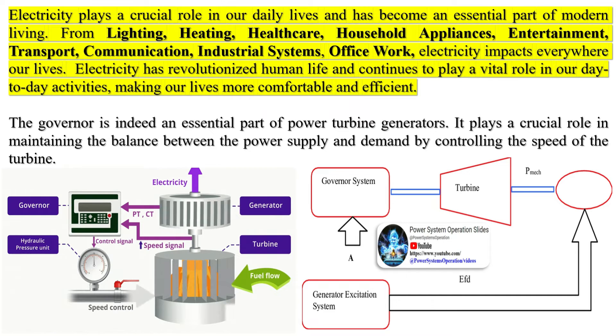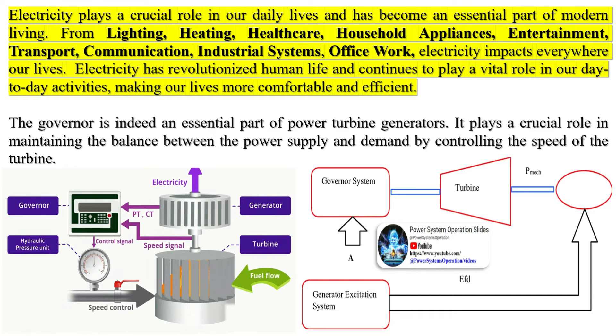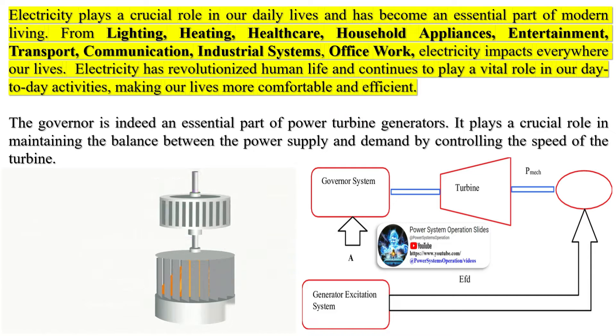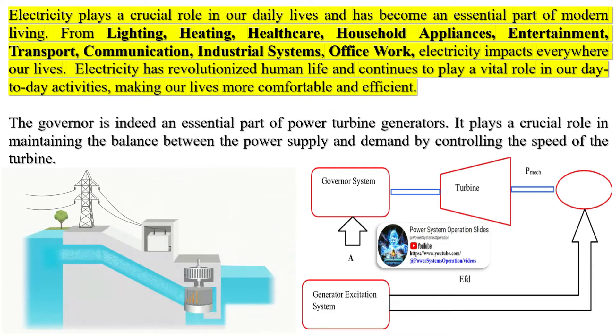Third, protection: speed governors, which control the speed droop, are also very important because they add protection to the turbine, preventing it from over-speeding.